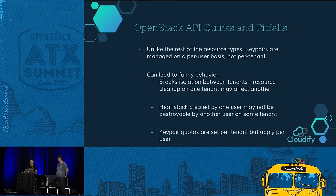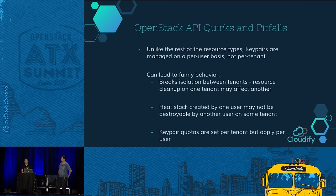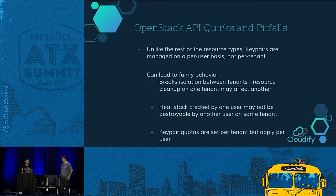Key pairs are the only resource managed on a per-user basis rather than a per-tenant one, and it can lead to funny behavior. For example, if you get a Heat stack on one tenant created by one user, another user might not be able to delete it because if the stack includes a key pair belonging to the first user, the second user won't have access. In general, it breaks isolation between tenants because an action on one tenant might affect the other.